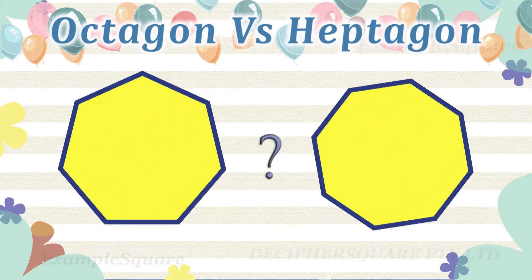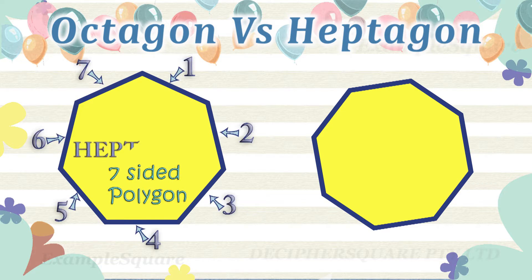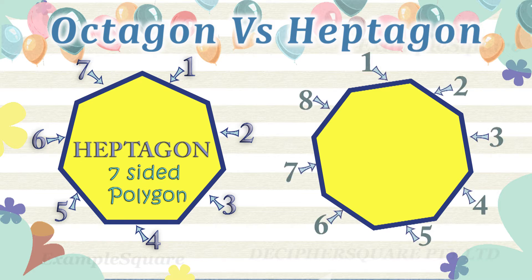Which one of these is an octagon and which one of these is a heptagon? A heptagon is a polygon with seven sides and seven corners. This is a heptagon. An octagon is a polygon with eight sides and eight corners.